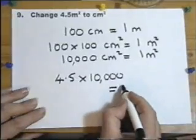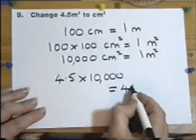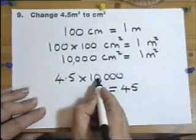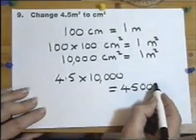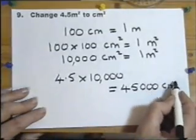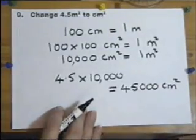Now whether you use a calculator or not at this stage is entirely up to you because it is a calculator paper. But hopefully you know that you move the dot one, two, three, four places, which means over the five, and we need three noughts on the end to change meters to centimeters.